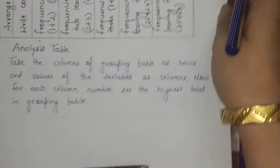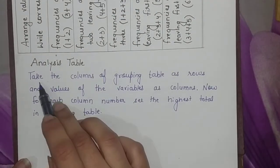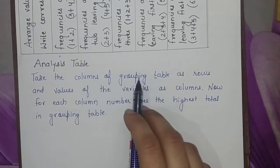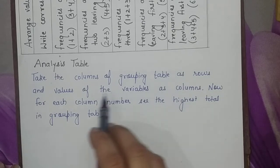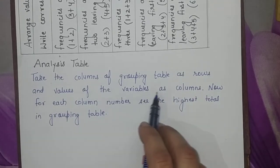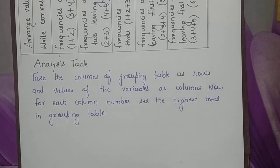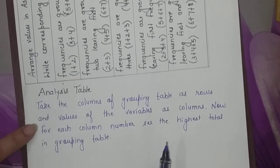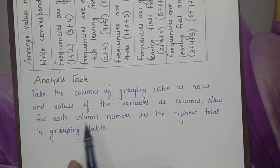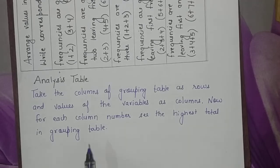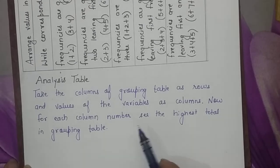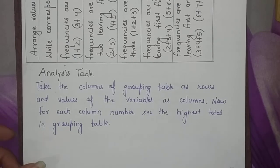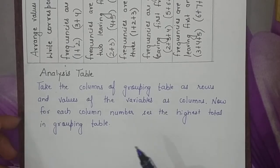Now we have to make the analysis table for the grouping table. The values of the variables from the first column are taken as columns in the analysis table. For each column number, we see the highest total in the grouping table, and this will help us proceed with the analysis table. Let's see a question for better understanding.